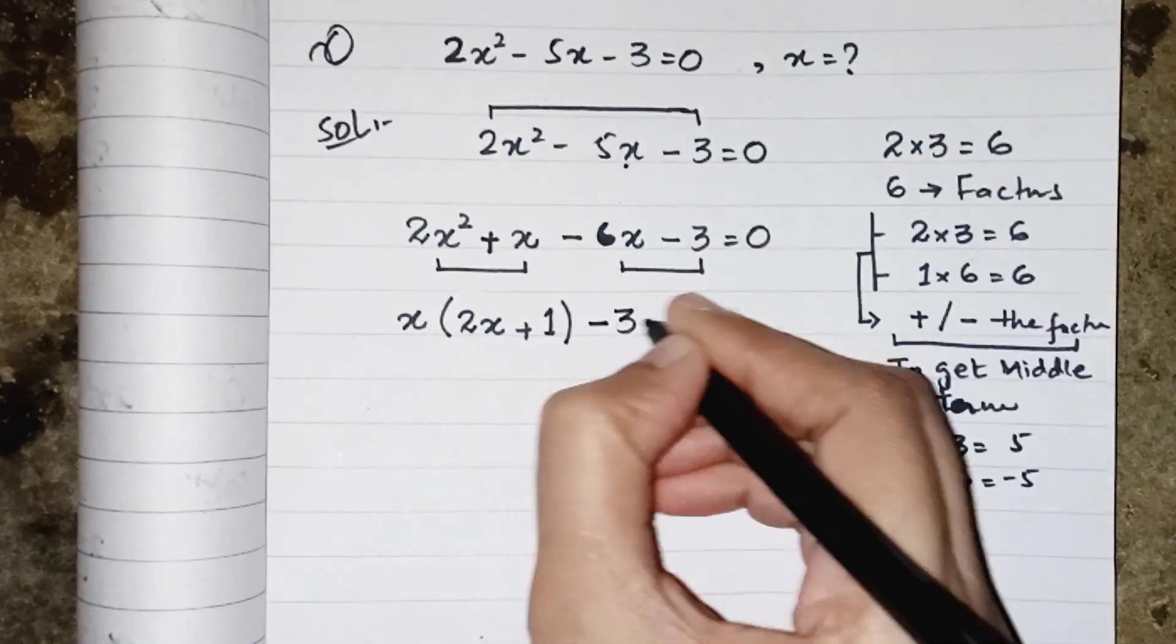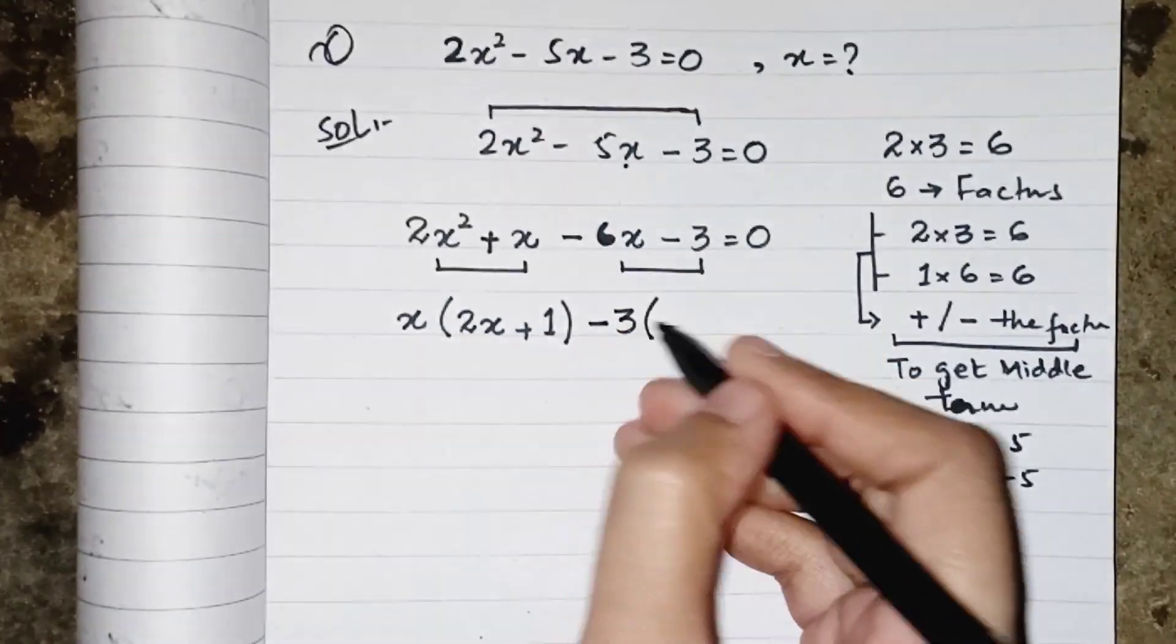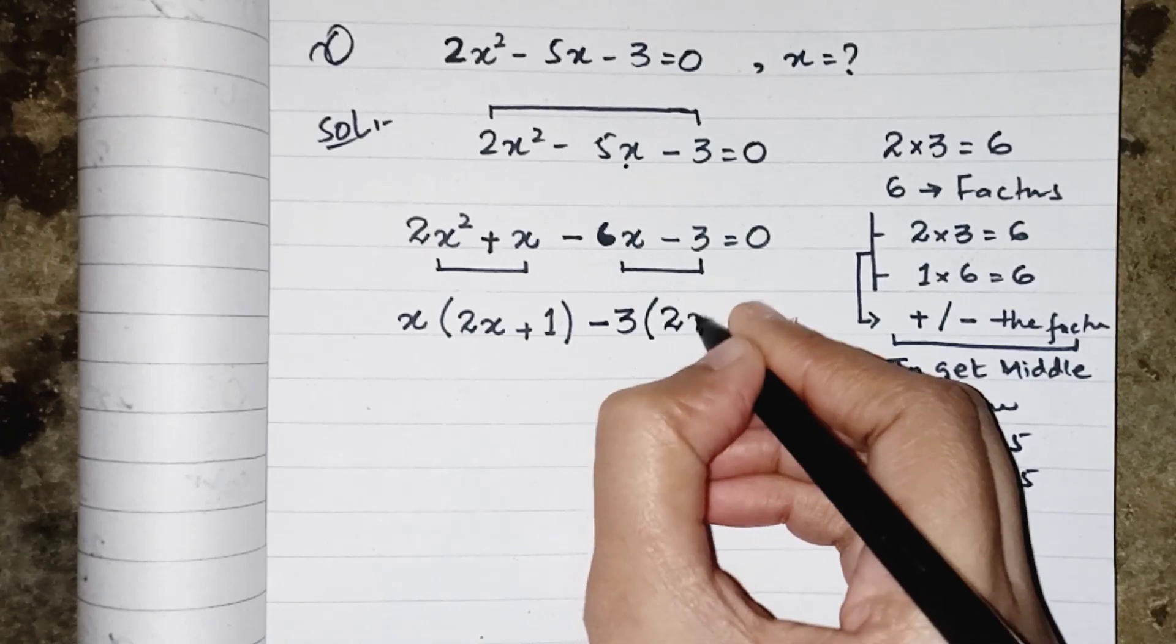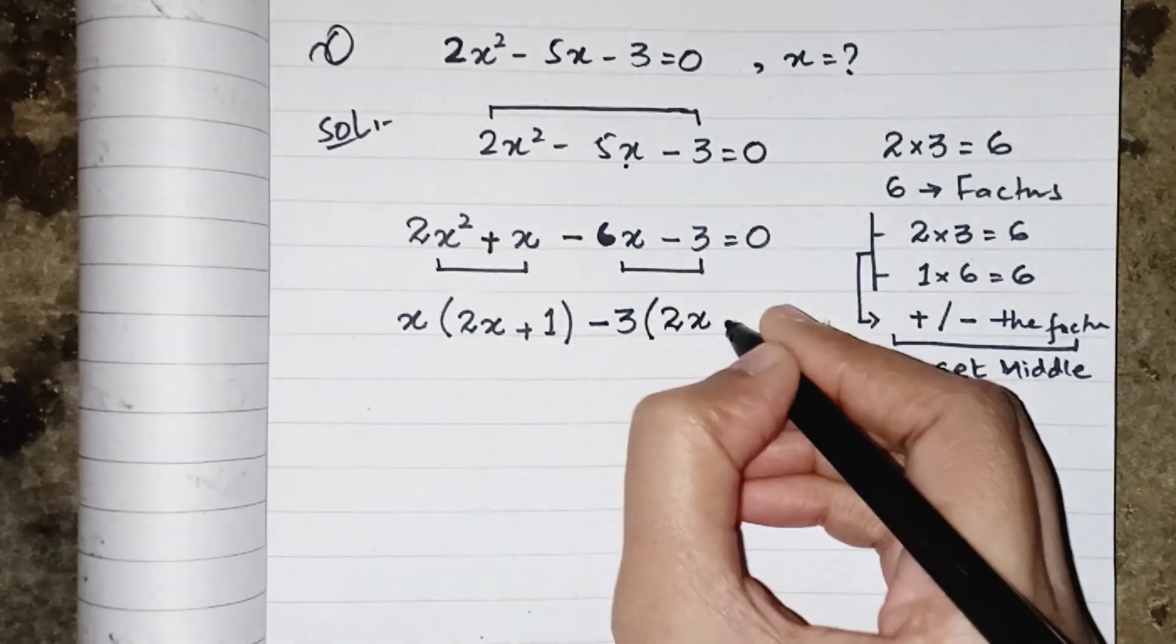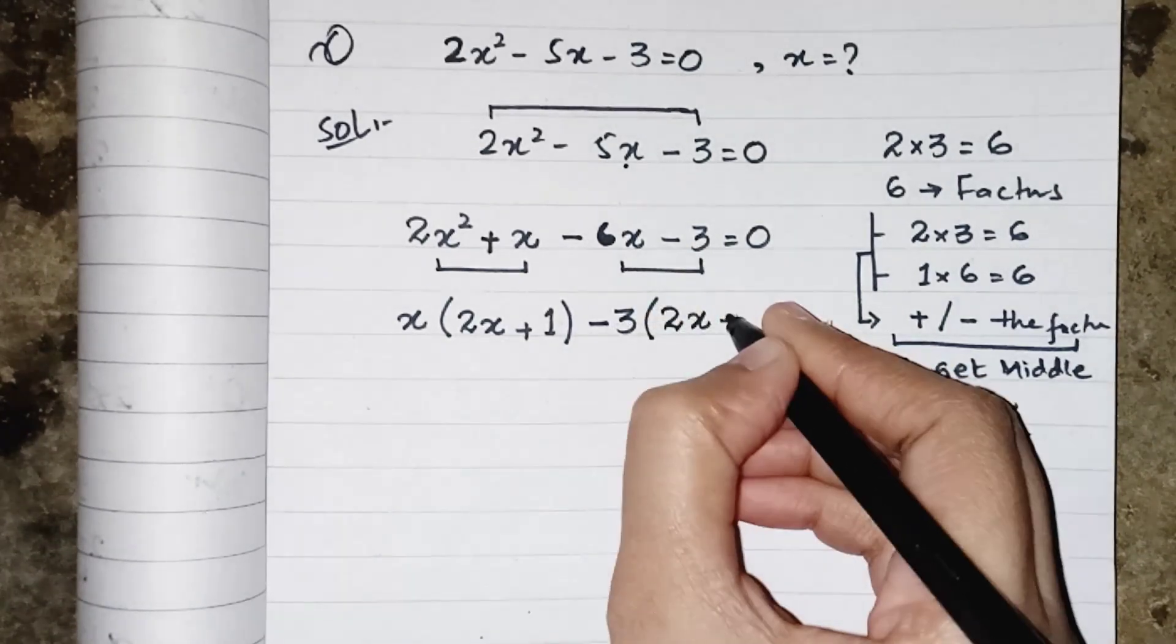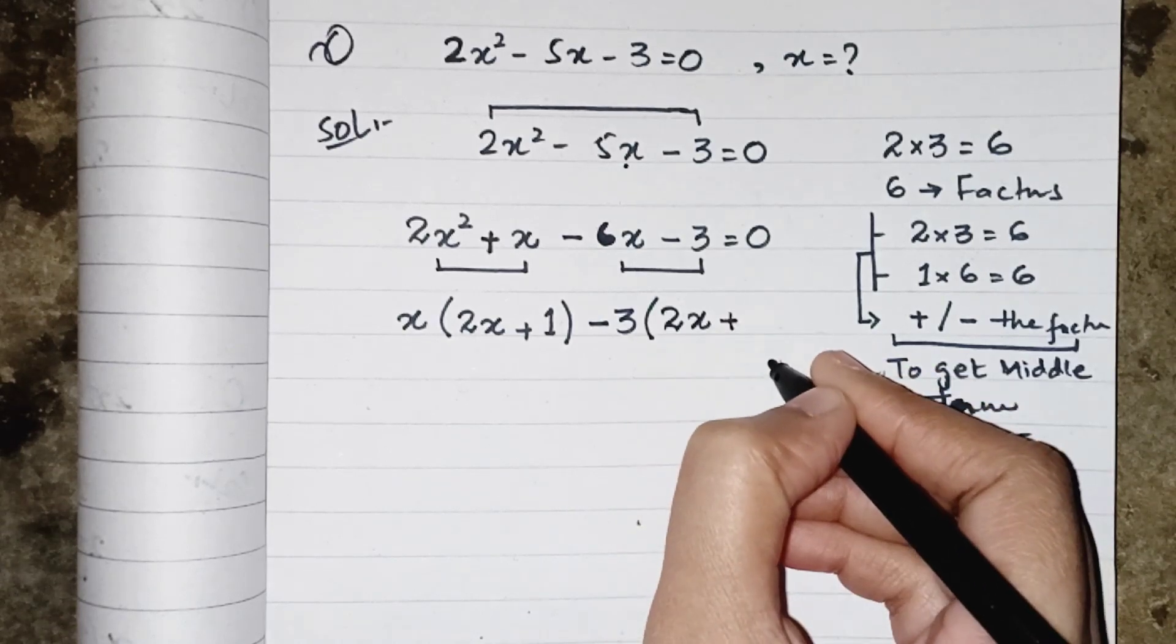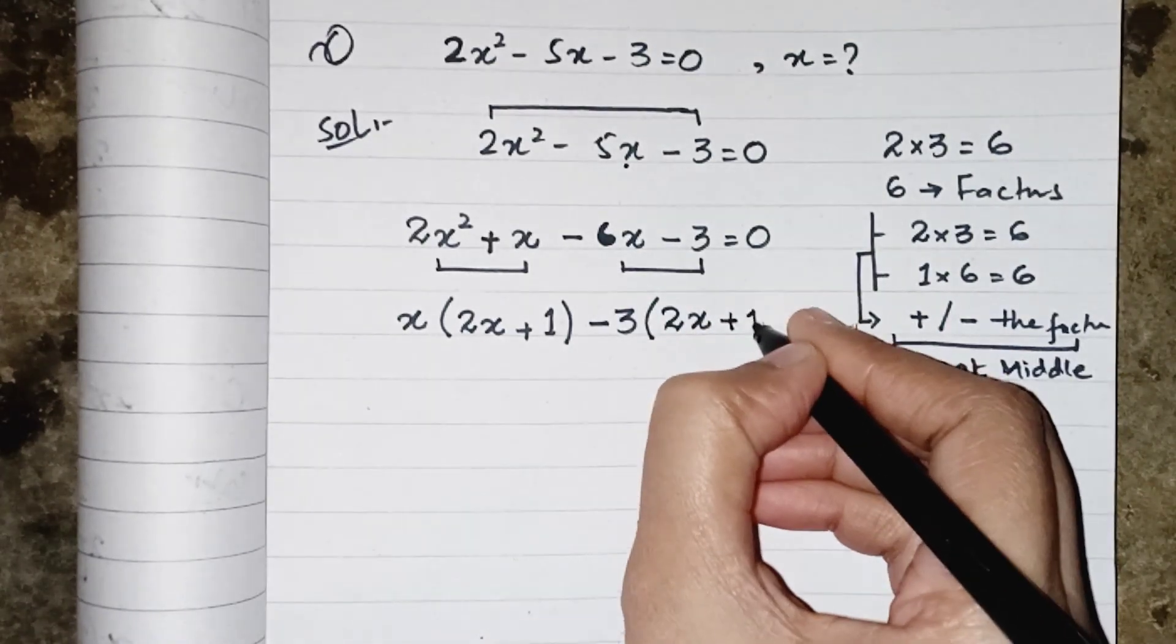Both terms are negative, so we can take minus sign as common, and both are the multiples of 3, so we will take 3 as common. 6 comes 2 times in the table of 3, so we will write 2x. We will take minus sign as common, so it will remain as plus, and 3 comes 1 time.